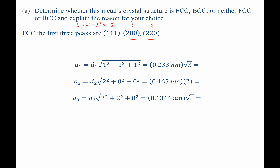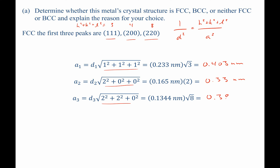Now we plug into the expression: 1 over D squared HKL equals H squared plus K squared plus L squared, all over A squared. Rearranging and solving for A, the lattice parameter, we write three expressions for the 111, 200, and 220 families. Plugging in the DHKL values, we calculate 0.403 nm for the first reflection, 0.33 nm for the second, and 0.38 nm for the third. Since A1 does not equal A2 and does not equal A3, we can confidently say the metal is not FCC.